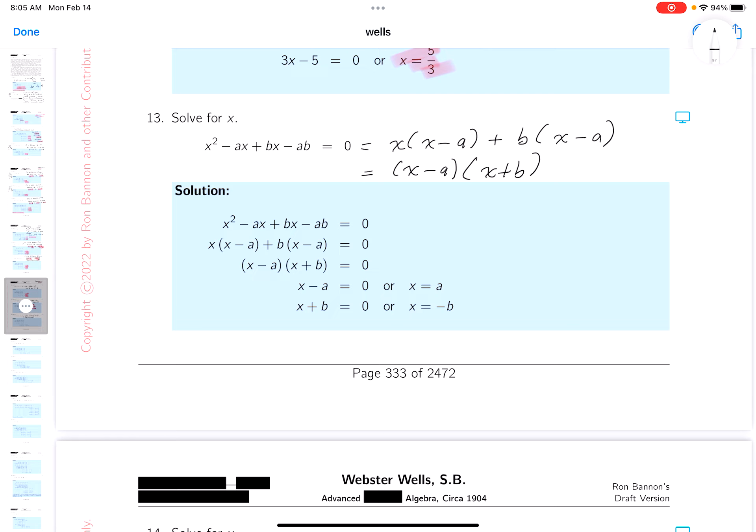What we're going to do now is set the factors equal to zero. So x minus a equals zero, or x plus b equals zero. This means x equals a, or x equals minus b. Let's just get a red pen out and check it.